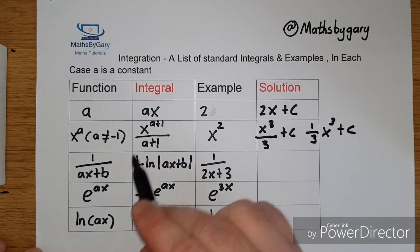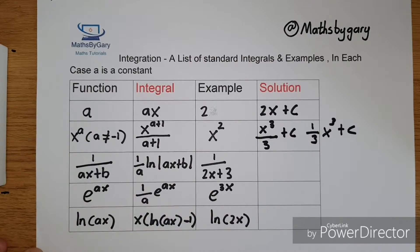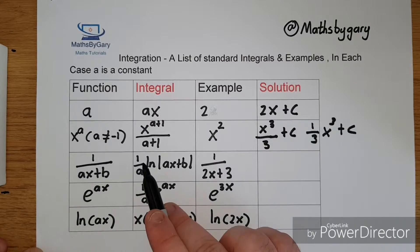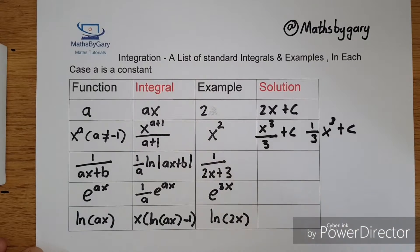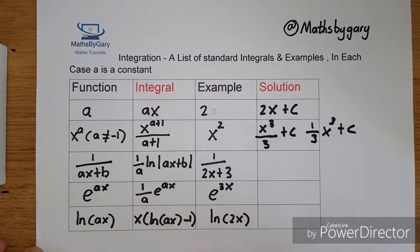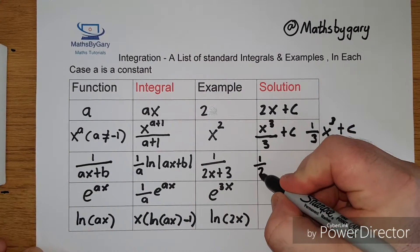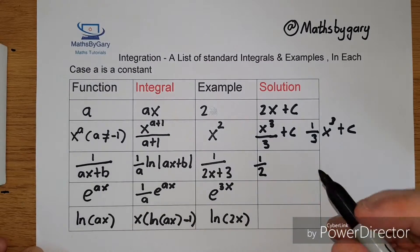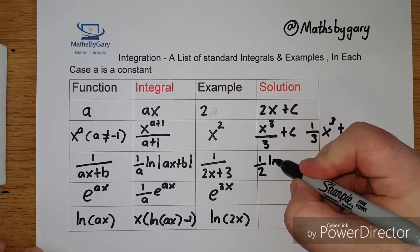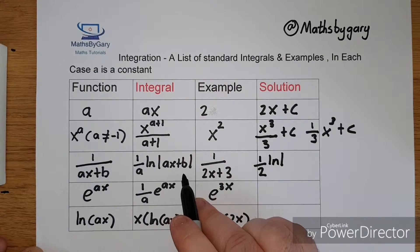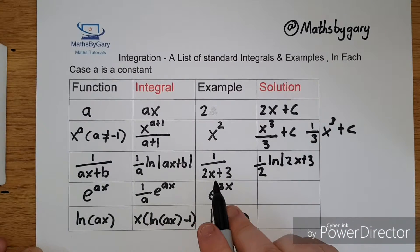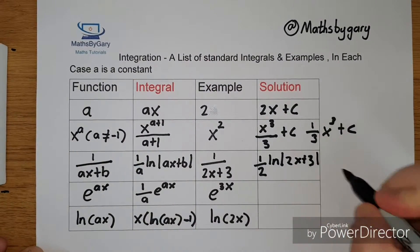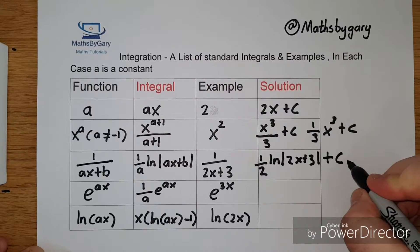Moving on to the next function: 1 over (ax + b). The integral of 1 over (ax + b) is 1 over a times ln|ax + b|. The example we have is 1 over (2x + 3). So we get 1 over 2 times ln|2x + 3|, and then the constant of integration plus c.